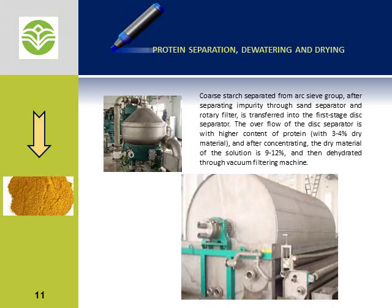Gluten separation, gluten dewatering, and drying. Gluten is separated from starch using a disc separator machine, then dewatered using a filtration system such as a vacuum filter or filter press, as seen in the picture. Dehydrated gluten is then dried by a tube bundle dryer machine which uses steam as the heating media for the drying process.